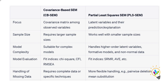The third feature is model complexity. Covariance-based SEM is suitable for complex models with many variables and intricate relationships — it can handle models with multiple latent variables and a large number of indicators. PLS-SEM is particularly advantageous when dealing with complex models involving higher-order latent variables, formative measurement models, or non-normal data.